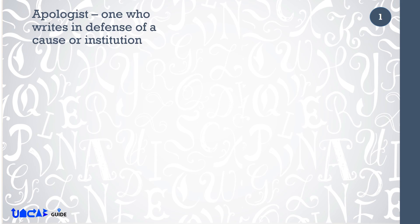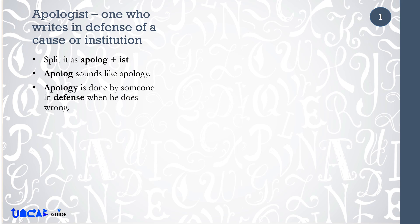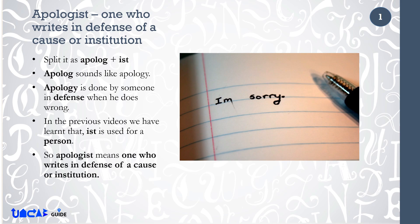Apologist means one who writes in defense of a cause or institution. Split it as Apolog plus Ist. Apolog sounds like Apology. Apology is done by someone in defense when he does something wrong. In the previous videos, we have learnt that Ist is used for a person. So, apologist means one who writes in defense of a cause or institution.